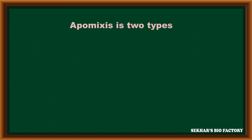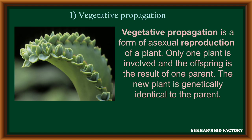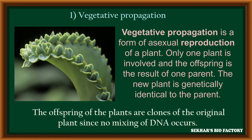Basically, there are two types of apomixis. The first type is vegetative propagation, and the second type is agamospermy. In vegetative reproduction, production of new plants takes place with the help of vegetative parts like root, stem, and leaf. The newly produced offspring are genetically identical to parents — only one parental plant participates, producing clones that are exact copies of the original parent due to absence of DNA mixing.